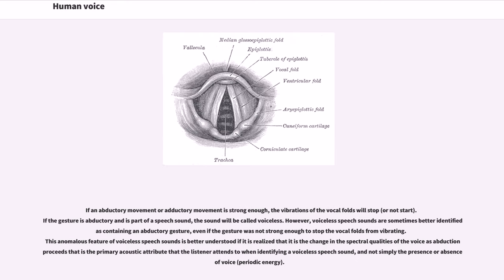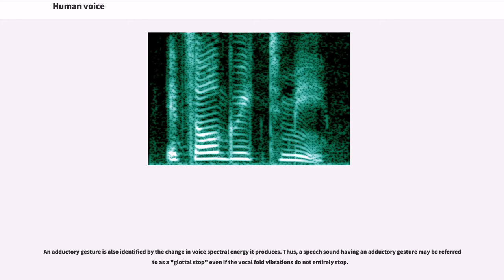If an abductory movement or adductory movement is strong enough, the vibrations of the vocal folds will stop. If the gesture is abductory and is part of a speech sound, the sound will be called voiceless. However, voiceless speech sounds are sometimes better identified as containing an abductory gesture, even if the gesture was not strong enough to stop the vocal folds from vibrating. This anomalous feature of voiceless speech sounds is better understood if it is realized that it is the change in the spectral qualities of the voice as abduction proceeds that is the primary acoustic attribute that the listener attends to when identifying a voiceless speech sound, and not simply the presence or absence of voice.